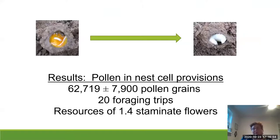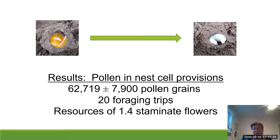We found that there were about 63,000 pollen grains in nest provisions, and that it took about 20 foraging trips to gather that many pollen grains, equivalent to the resources of 1.2 staminate flowers. Interestingly, this also gave us information about how much pollen a hoary squash bee larva consumes in its lifetime — information that is really important because it allowed me to evaluate larval exposure to pesticides in pollen.